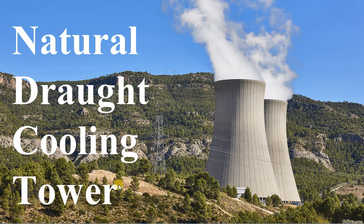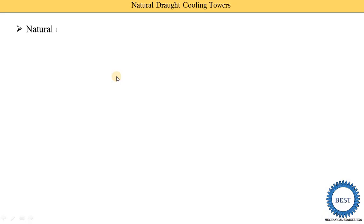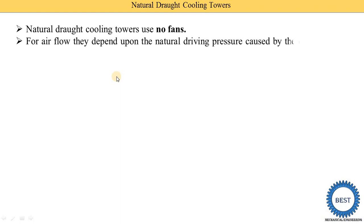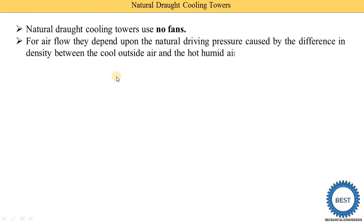The second word, cooling tower, means cooling of water is carried out in this tower. Cooling of water is carried out by using air, and air circulation is carried out by density difference — naturally, no fan is used. Circulation of air depends upon the natural driving pressure of air caused by the difference in density between the cool outside air and hot humid air inside.